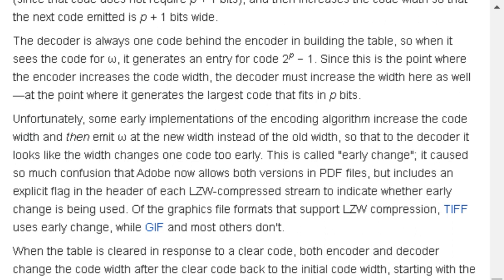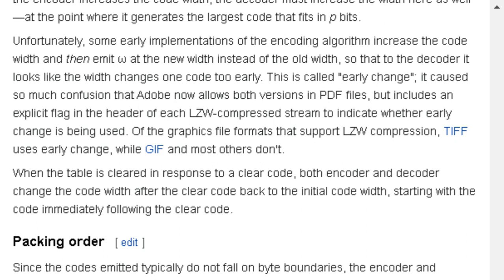Unfortunately, some early implementations of the encoding algorithm increase the code width and then emit omega at the new width instead of the old width, so that to the decoder it looks like the width changes one code too early. This is called early change. It caused so much confusion that Adobe now allows both versions in PDF files, but includes an explicit flag in the header of each LZW compressed stream to indicate whether early change is being used. Of the graphics file formats that support LZW compression, TIFF uses early change while GIF and most others don't.